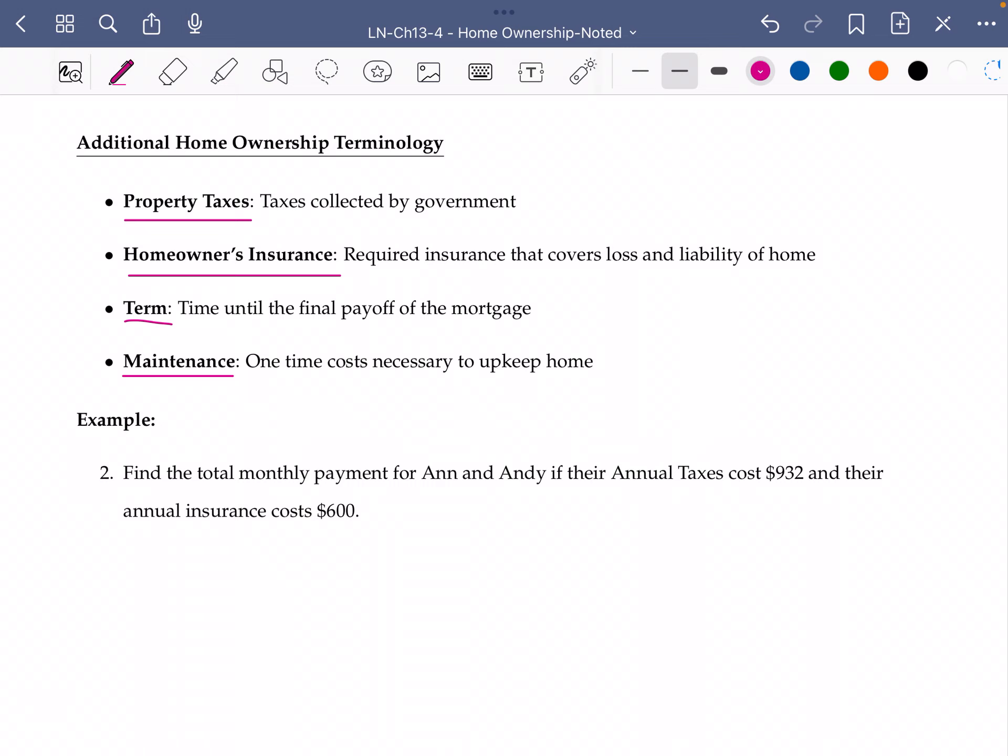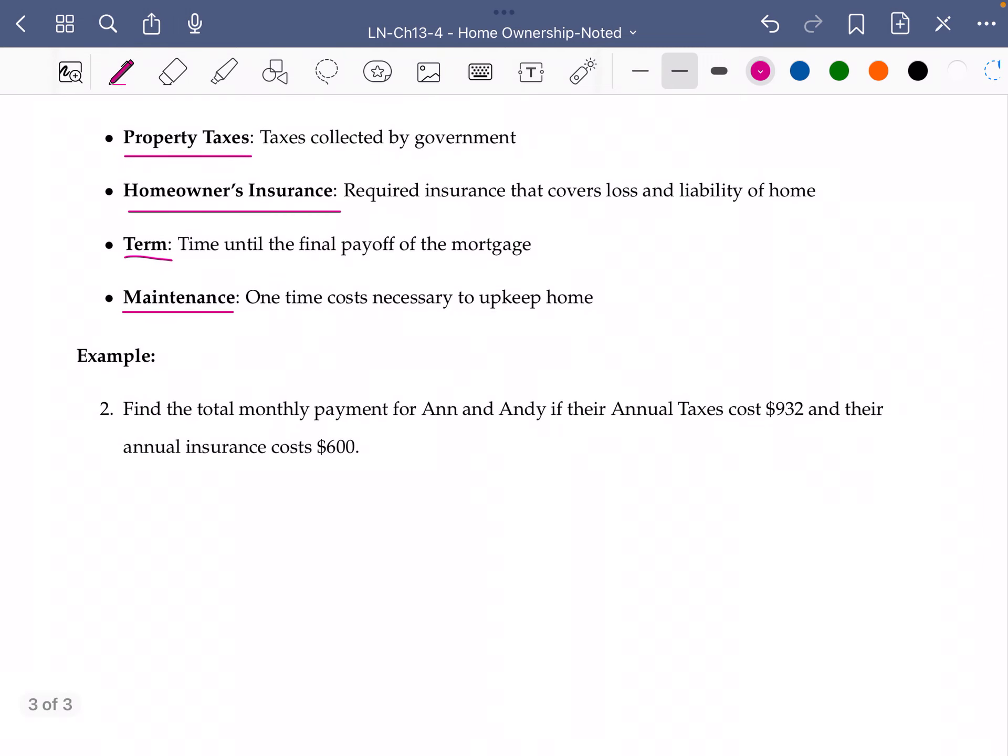And so we are going to find the monthly payment for Ann and Andy, the example that we did in our last video, if their annual taxes cost $932 and their annual insurance is $600.